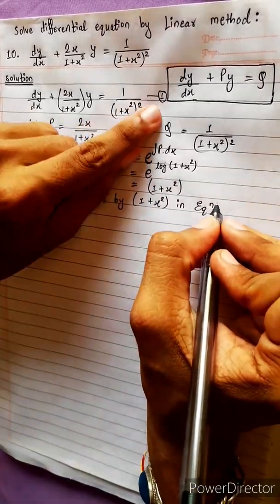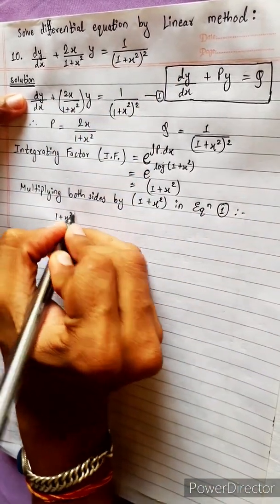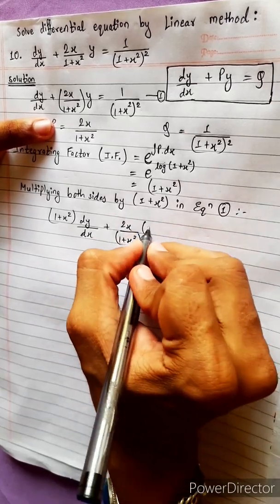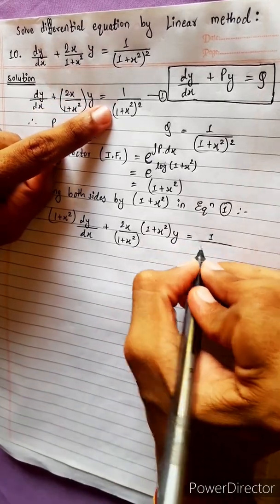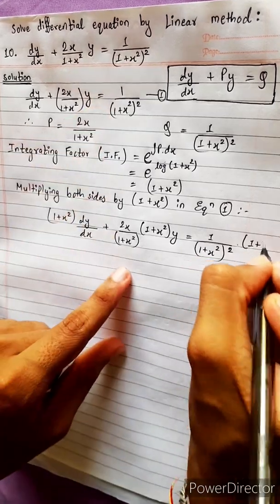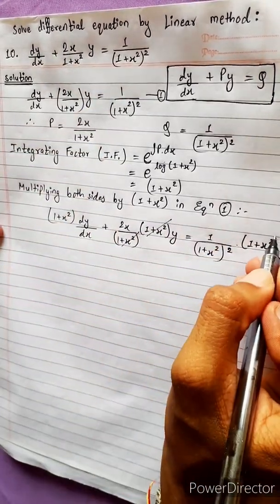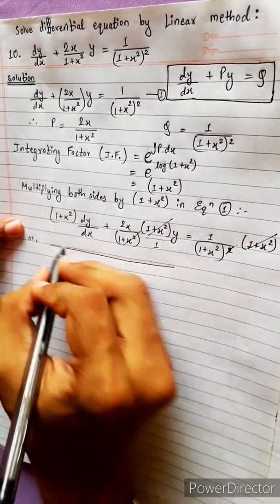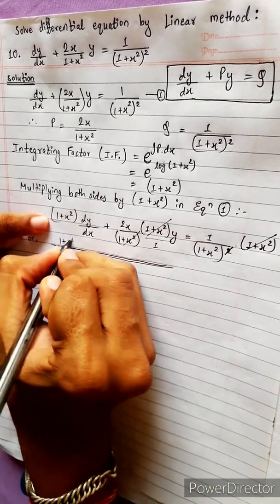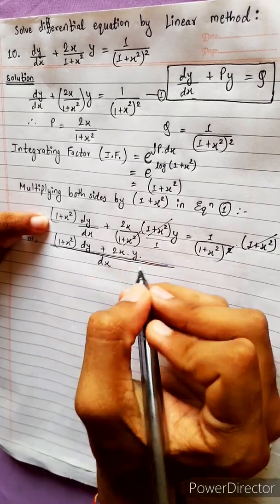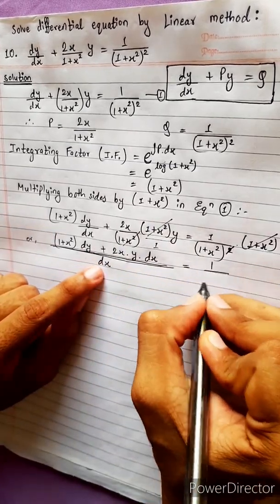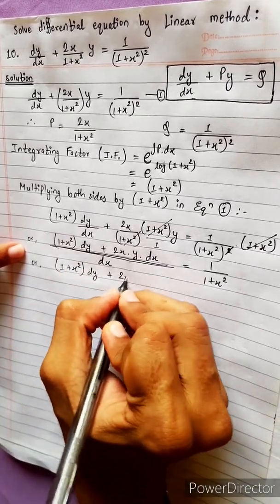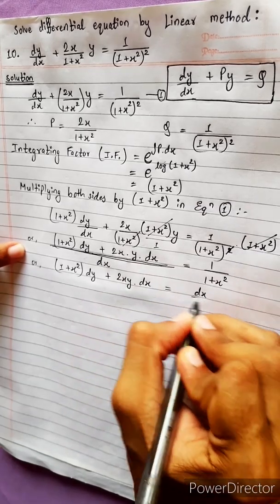Multiplying equation 1 by (1 + x²): (1 + x²)·dy/dx plus (2x/(1 + x²))·(1 + x²)·y equals 1/(1 + x²)². The (1 + x²) terms cancel in the middle, giving: (1 + x²) dy plus 2xy dx equals dx/(1 + x²).